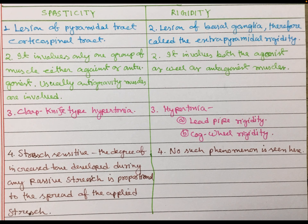Spasticity is velocity-dependent, and when it starts on onset it increases, so it is also called clasp-knife type of hypertonia. Rigidity is not velocity-dependent, so it is called lead pipe rigidity. Both of these are types of hypertonicity.